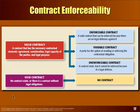Contract enforceability. Under valid contracts — contracts that have all the elements — a valid contract is enforceable when there isn't a legal defense that can be raised in court. An unenforceable contract is a valid contract but the court can't enforce it — there's some legal defense, such as it not being in writing when it should have been, or genuineness of assent as another argument.